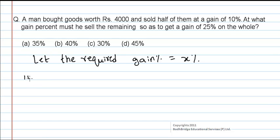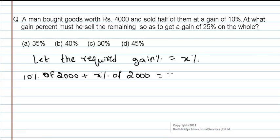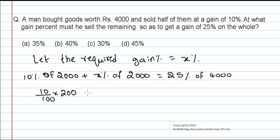As per the given condition, we can write that 10% of 2000 plus x% of 2000 — because 2000 is half of 4000 — is equal to 25% of 4000, since overall he is getting a gain of 25% on the whole. This can be further simplified as: 10/100 × 2000 + x/100 × 2000 = 25/100 × 4000.